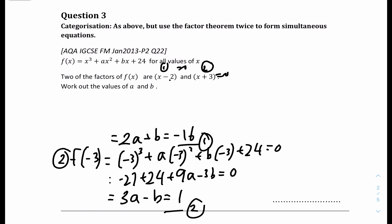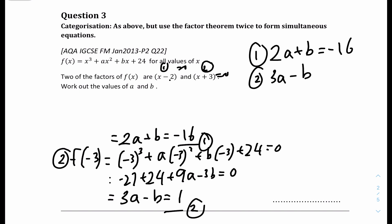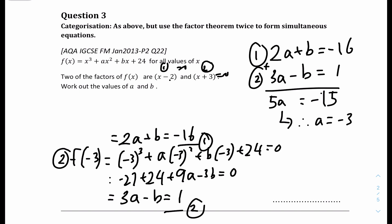With equations 1 and 2: equation 1 is 2a plus b equals minus 16, and equation 2 is 3a minus b equals 1. Adding both equations cancels out b: 2a plus 3a gives 5a, and minus 16 plus 1 gives minus 15. So 5a equals minus 15, meaning a equals minus 3. Substituting a equals minus 3 back into equation 1: 2 times minus 3 is minus 6, and minus 16 plus 6 gives b equals minus 10. So a equals minus 3 and b equals minus 10.